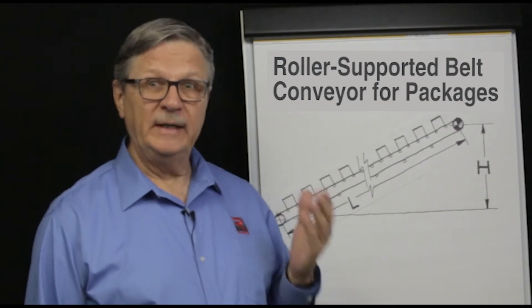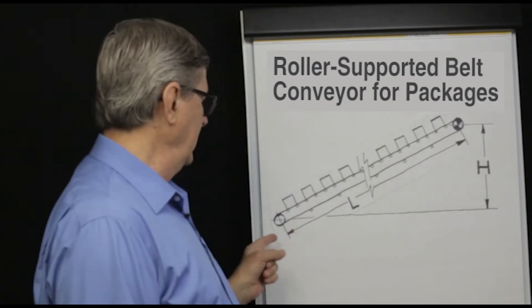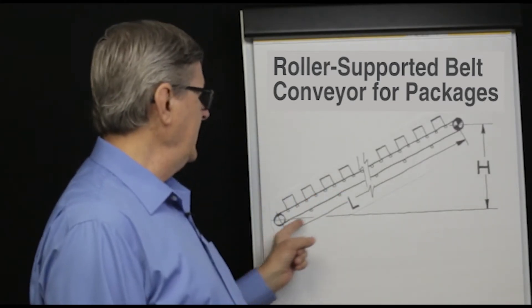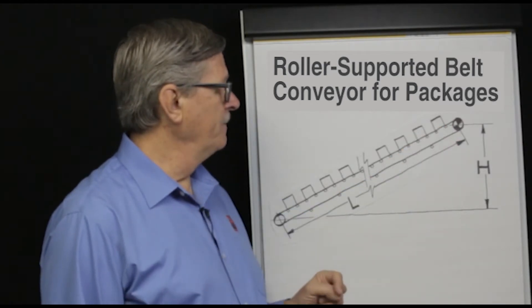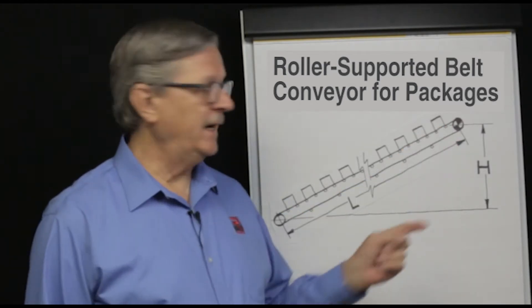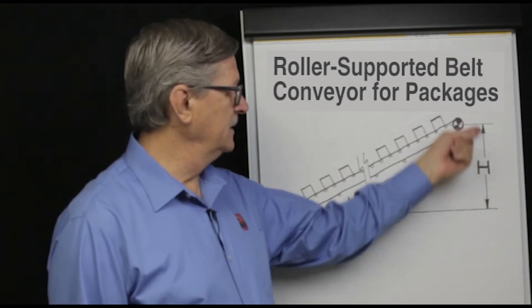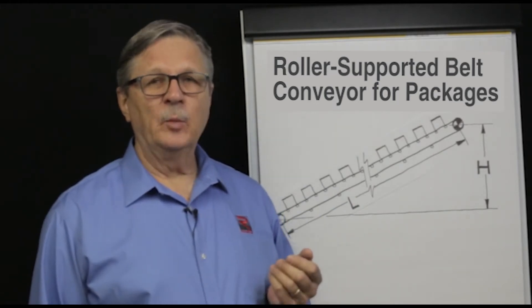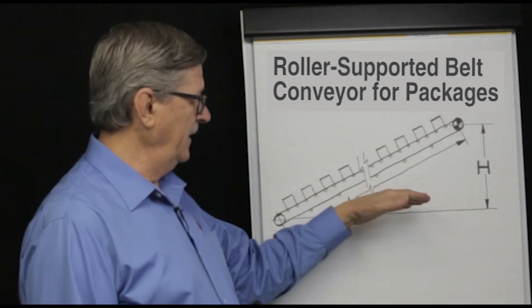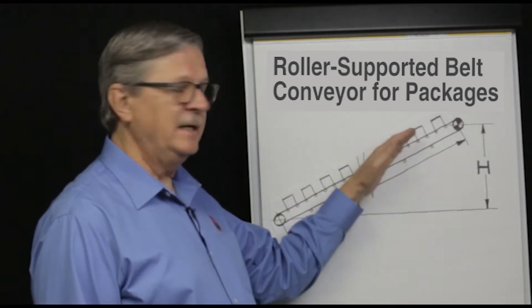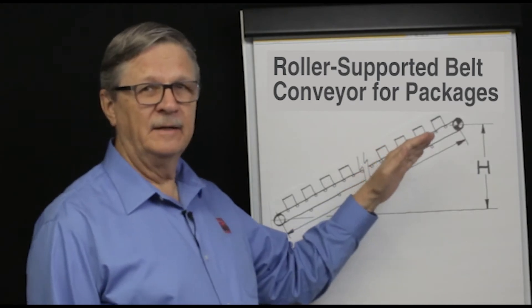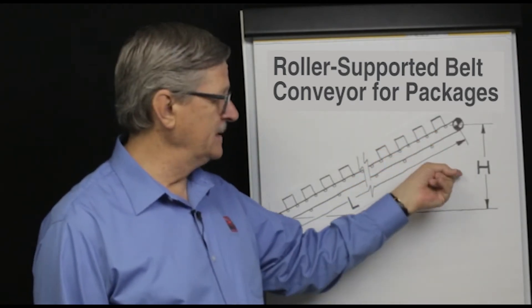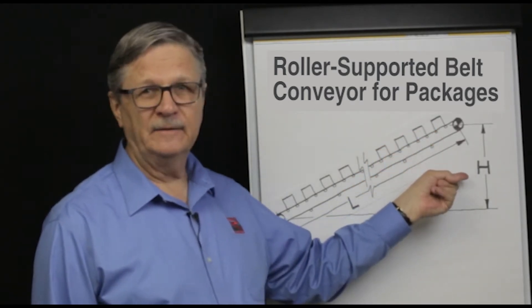We define the conveyor as having a length of L and a lift height of H. The equations will apply both to a horizontal conveyor and an inclined conveyor, and we make that adjustment simply with the parameter H.